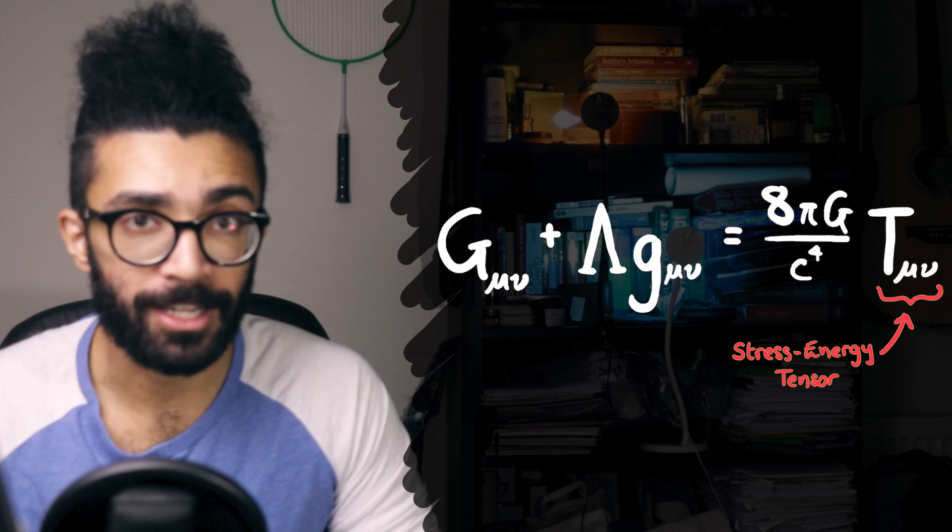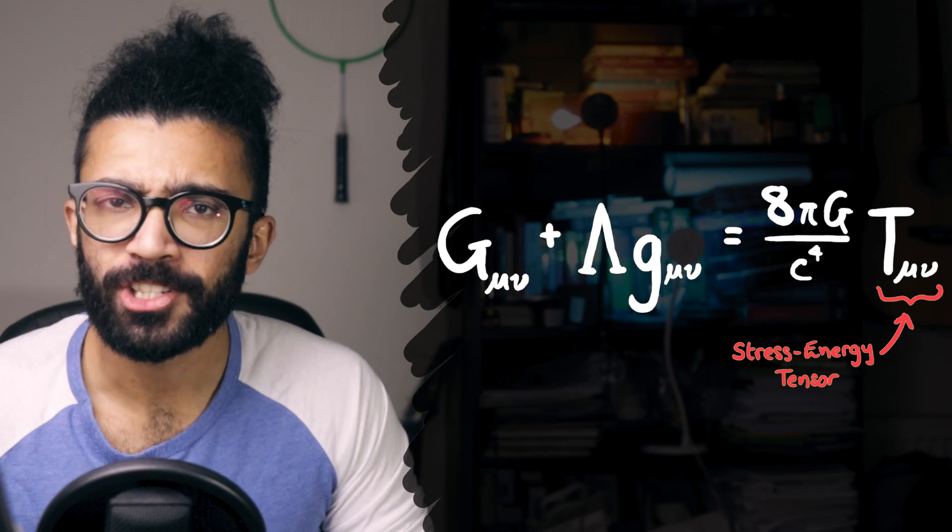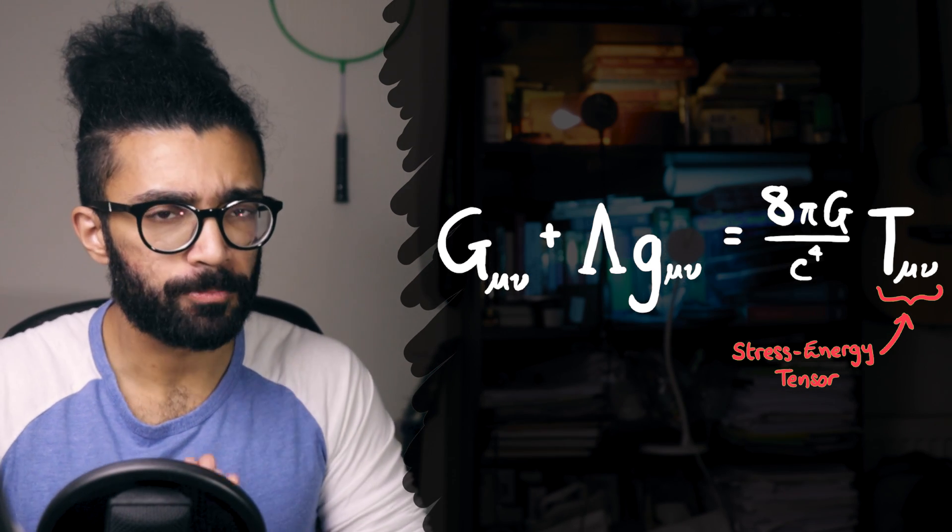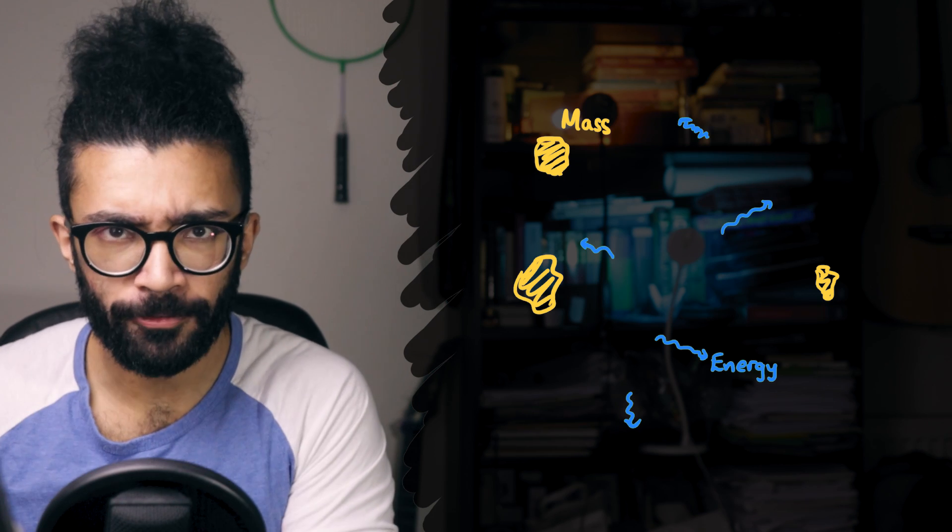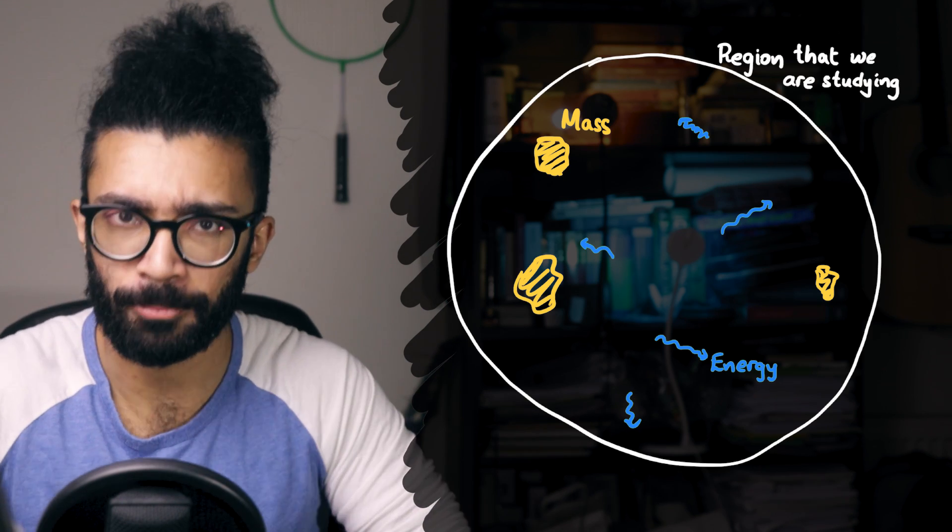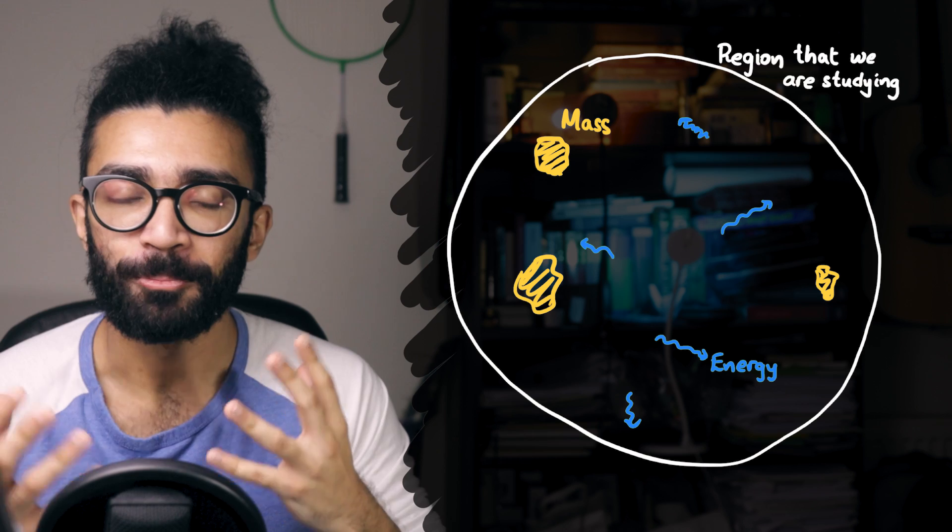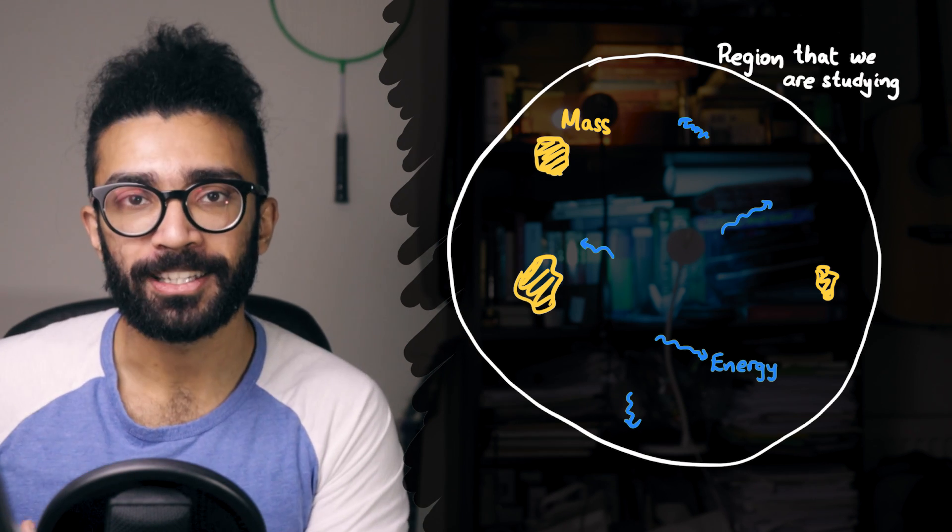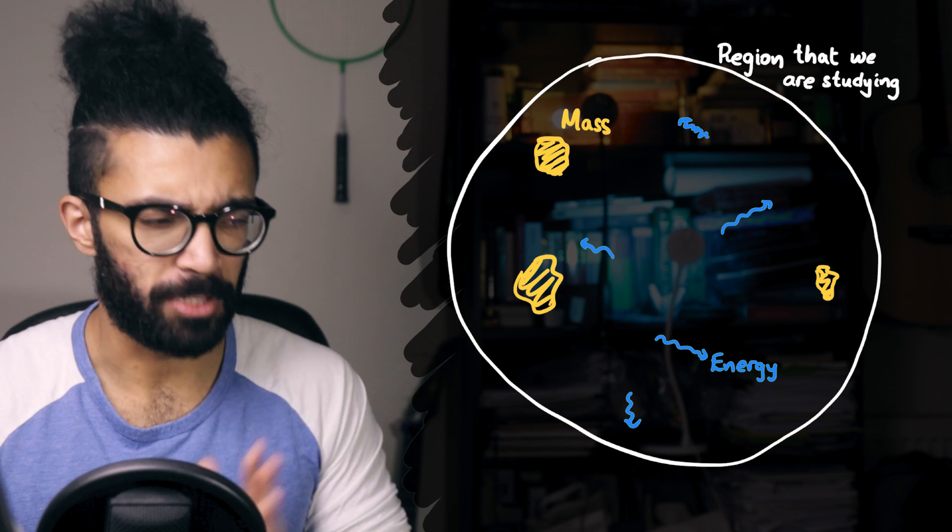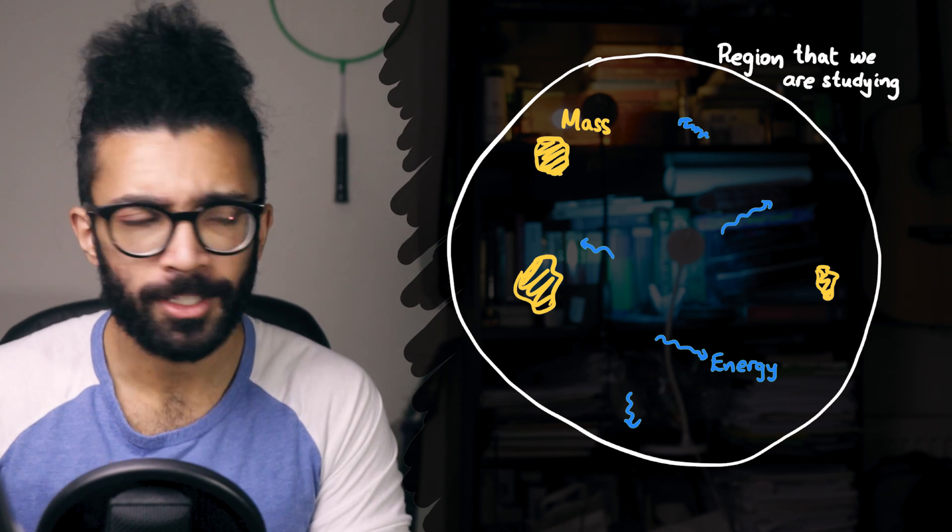The first tensor we'll be looking at is T subscript mu nu. It's known as the stress energy tensor. Essentially, it contains information about the distribution of stuff in the region of spacetime that we happen to be considering. Stuff meaning mass and energy. Many of you might be familiar with the idea that mass and energy are equivalent, exchangeable, if you will.